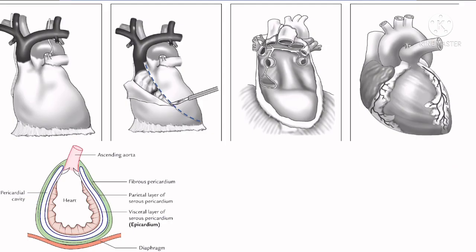The heart is enclosed in a fibroserous sac which is known as the pericardium. The pericardium comprises three layers from outside inwards. The most outside layer is known as the fibrous pericardium. Inside the fibrous pericardium there lies the serous pericardium, consisting of two layers.